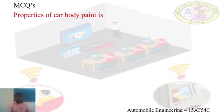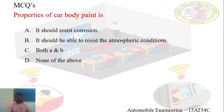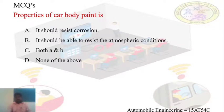The second question is: what are the properties of a car body paint? The options are: it should resist corrosion; it should be able to resist the atmospheric conditions; both A and B; and the last option is the nerve layer. As explained earlier, the properties of paint are that it should resist the atmospheric condition as well as resist the corrosion. So the answer is option C, both A and B.